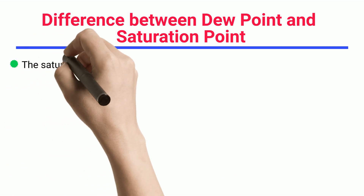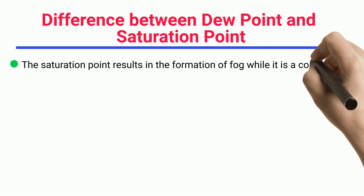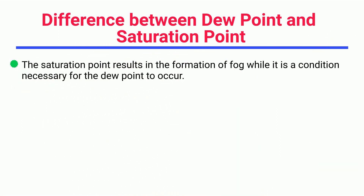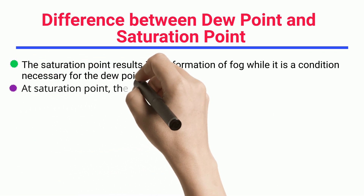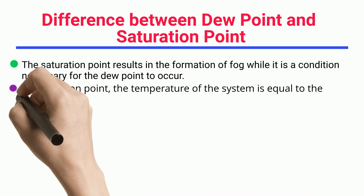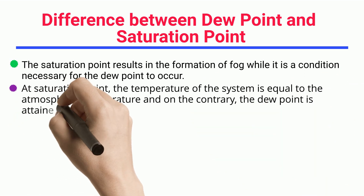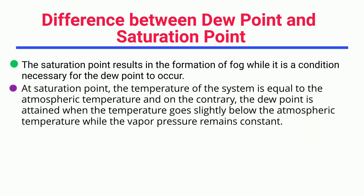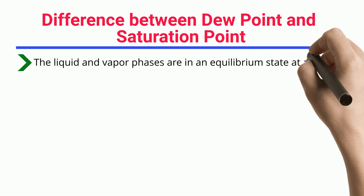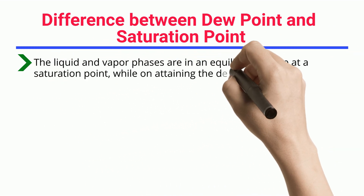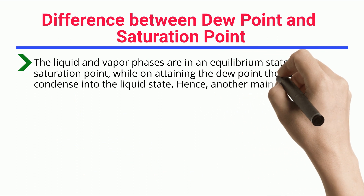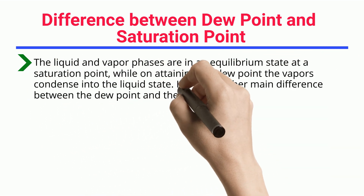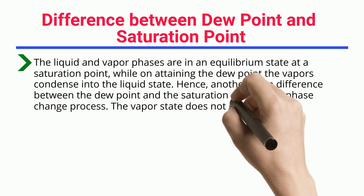What is the difference between the dew point and saturation point? The saturation point results in the formation of fog, while it is also a condition necessary for the dew point to occur. At the saturation point, the temperature of the system is equal to the atmospheric temperature. The dew point is attained when the temperature goes slightly below the atmospheric temperature while vapor pressure remains constant. The liquid and vapor phases are in an equilibrium state at the saturation point, while at the dew point the vapors condense into the liquid state.